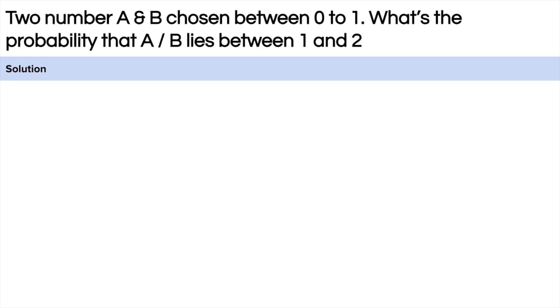Suppose there are two numbers A and B and both of these numbers lie between 0 to 1. What is the probability that division of the number, that is A by B, lies between 1 and 2? This is the question. I hope you have understood the question. Let's see how we can go about this.